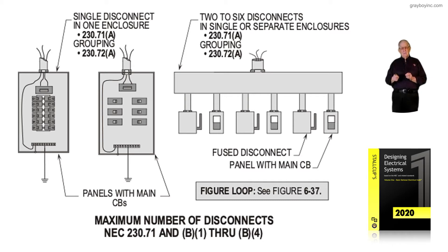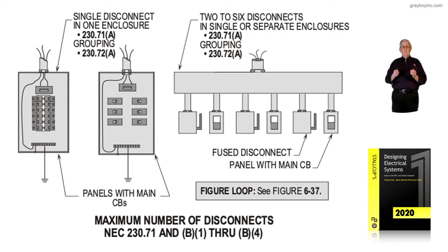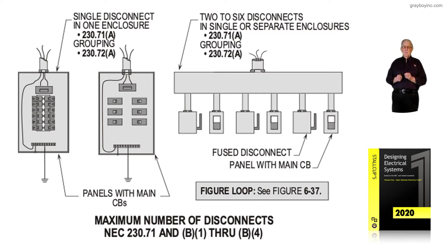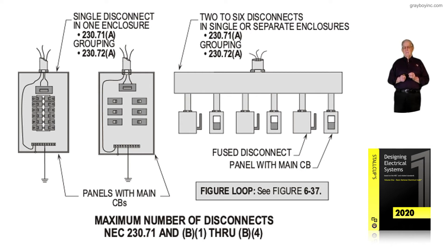The last illustration points out to the right, showing an auxiliary gutter and switches that are tapped there. Look at 230.71A — we're allowed those 2 to 6 disconnects in separate enclosures, but not in one enclosure as you see in the middle. You have to have a main ahead of those, and in 408.36, that permissive rule has been dropped also.